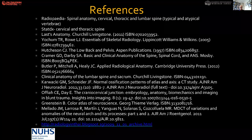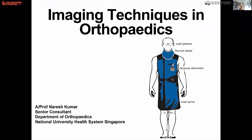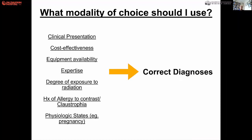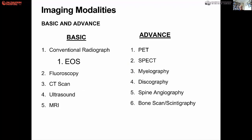A few more slides and then we're done. The choice of imaging depends on the clinical presentation, cost-effectiveness, equipment availability, and the physiologic status of the patient. For pregnant patients, MRI scan or ultrasound is the safest method. Imaging is divided into basic and advanced. Basic imaging is conventional radiograph.